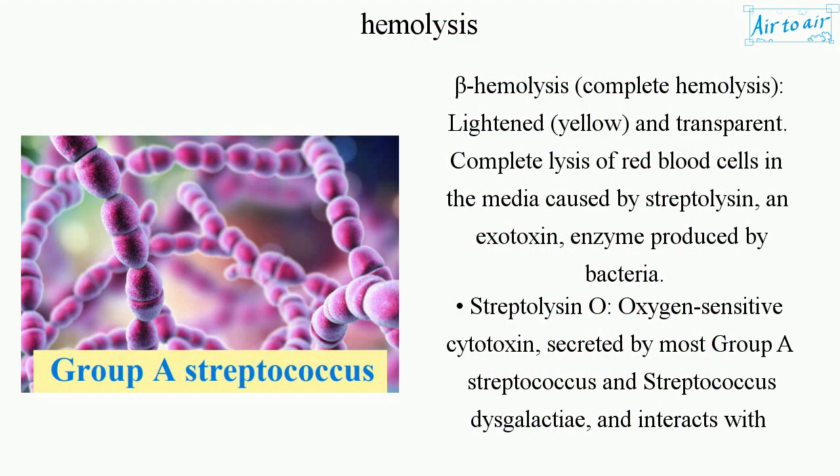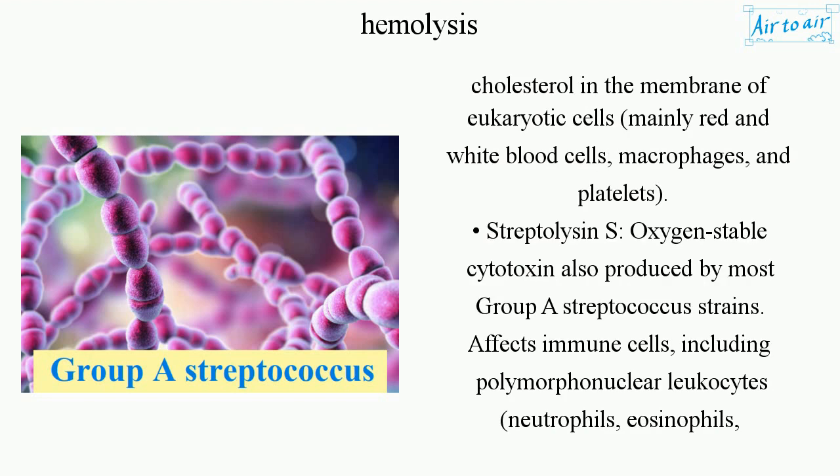Beta hemolysis is complete hemolysis — the media appears lightened, yellow, and transparent due to complete lysis of red blood cells. It is caused by streptolysin, an exotoxin enzyme produced by bacteria. Streptolysin O is an oxygen-sensitive cytotoxin secreted by most group A Streptococcus and Streptococcus dysgalactiae, and interacts with cholesterol in the membrane of eukaryotic cells, mainly red and white blood cells, macrophages, and platelets.